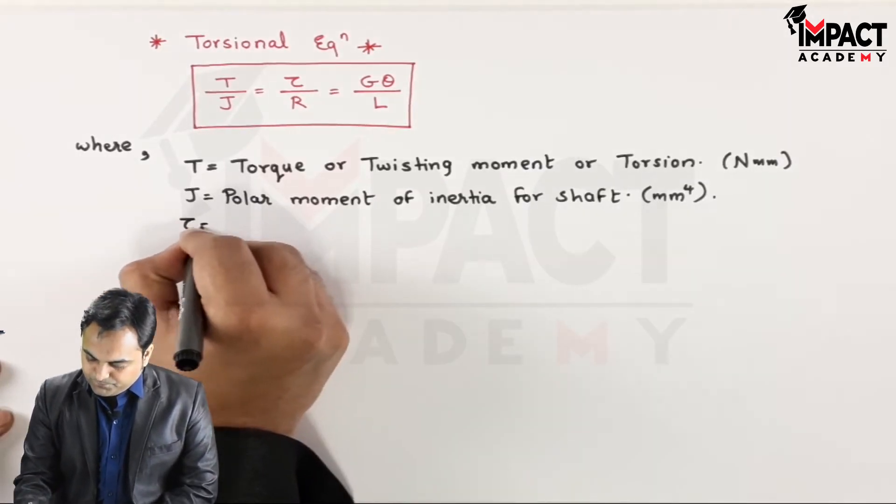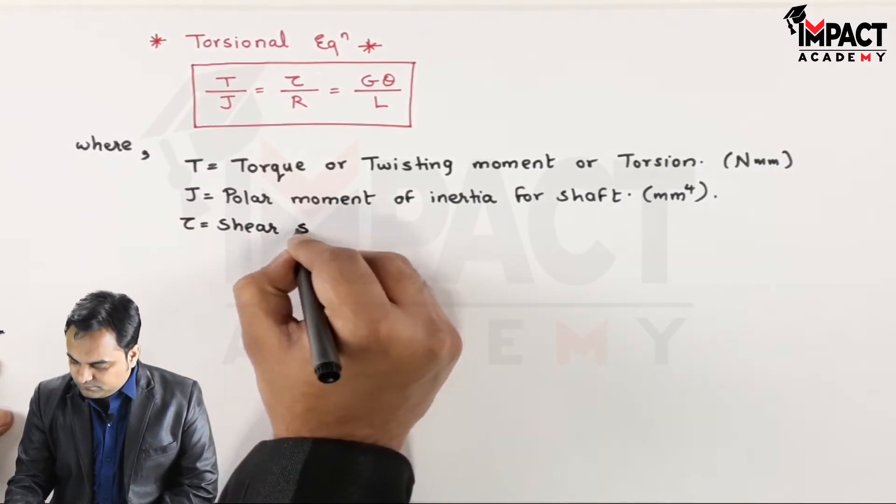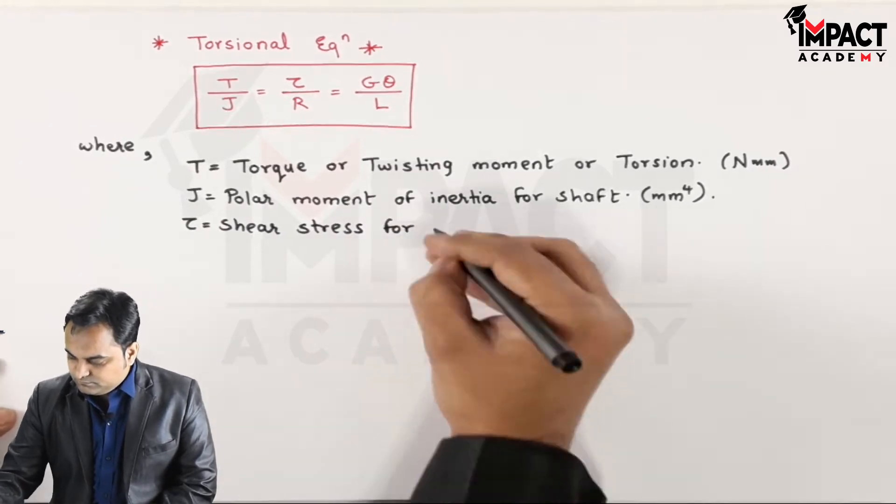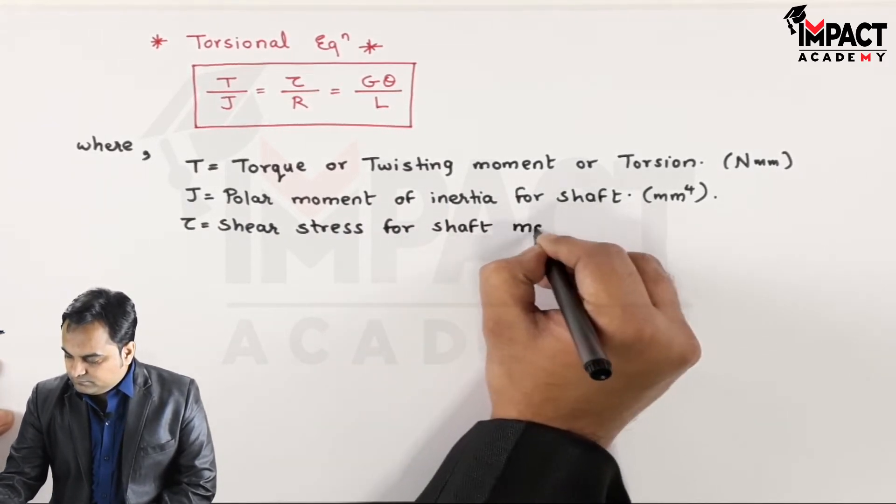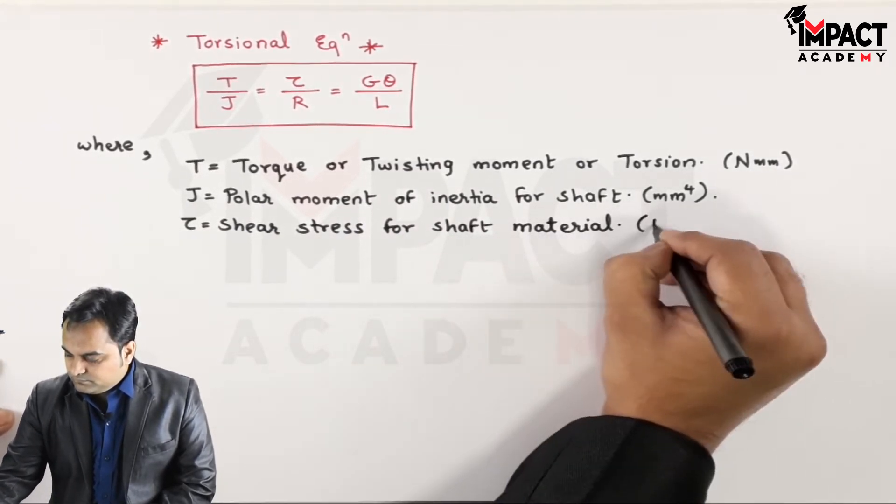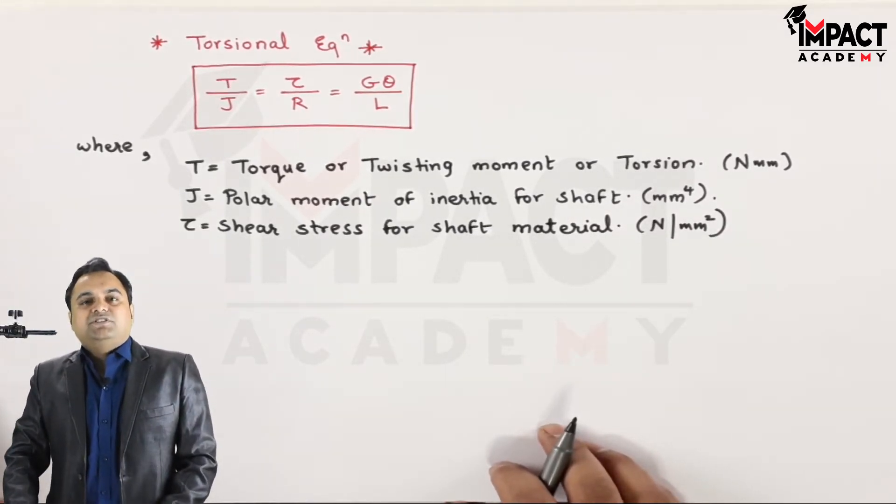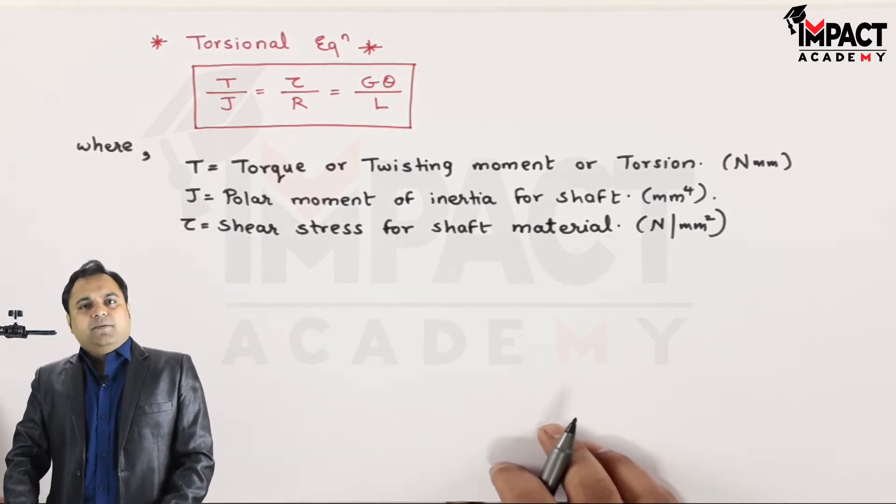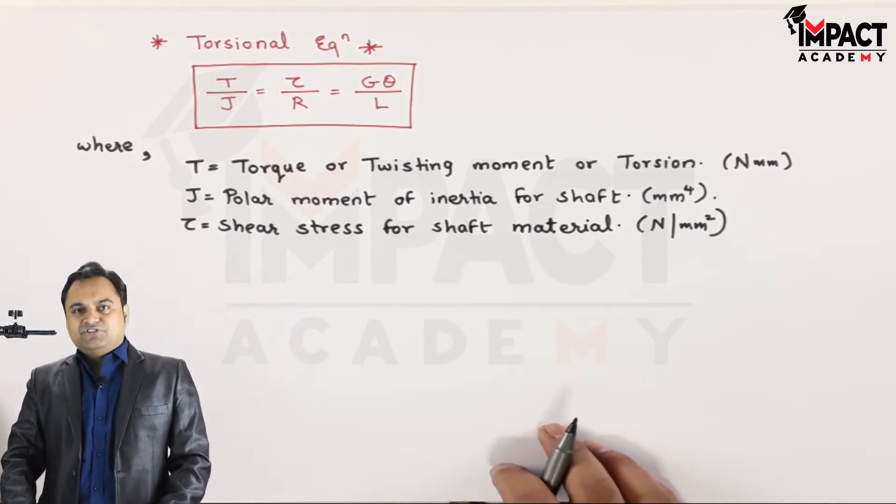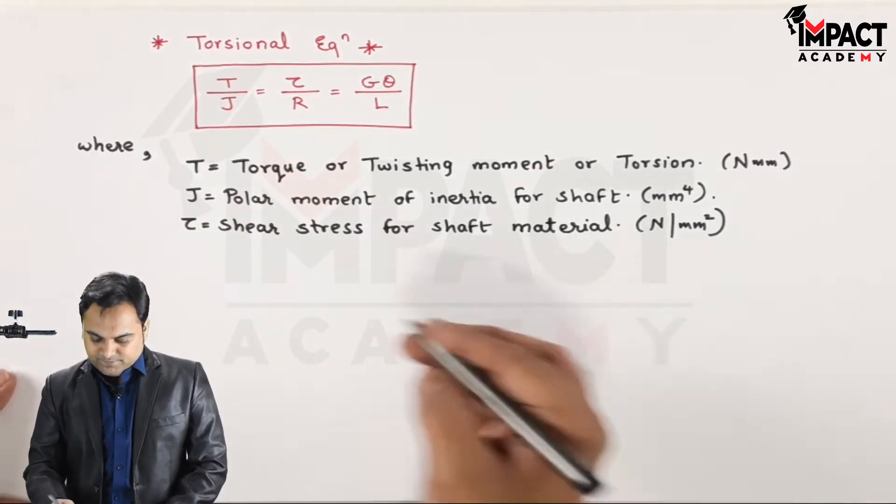It is the shear stress for shaft material which is given by newton per millimeter square. It is the unit of the shear stress. Now this is... Then R.